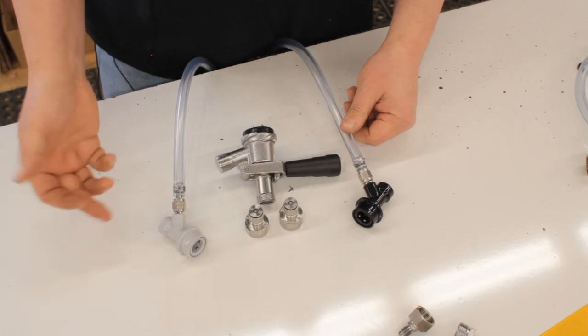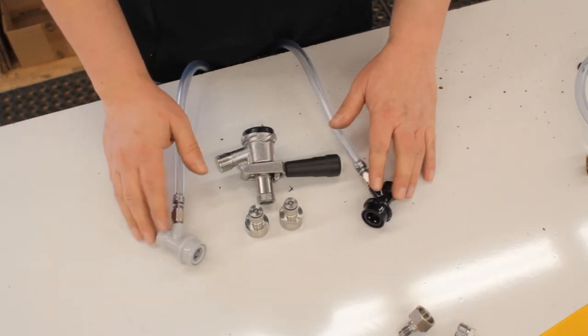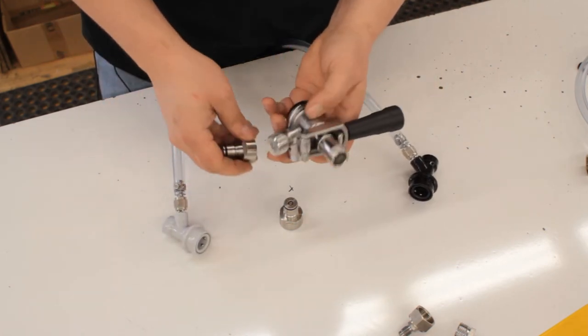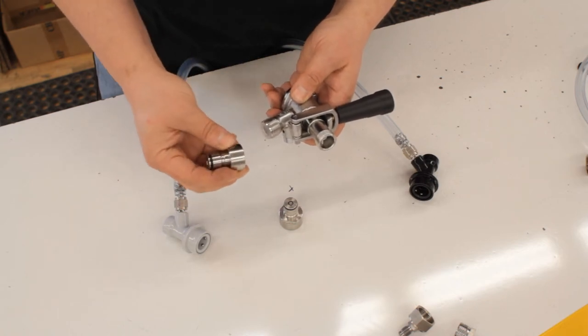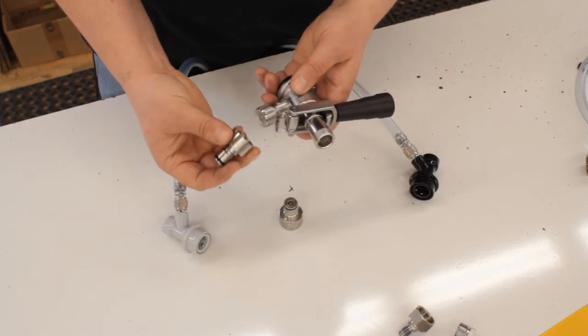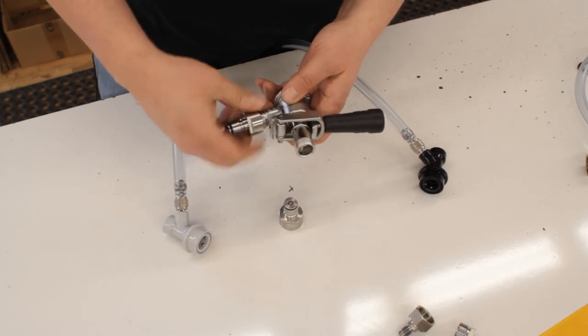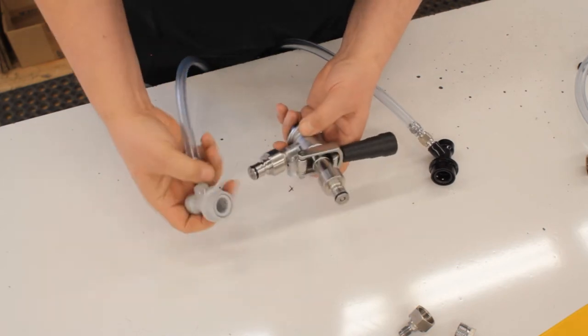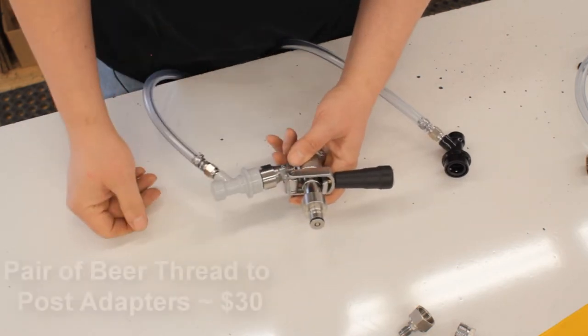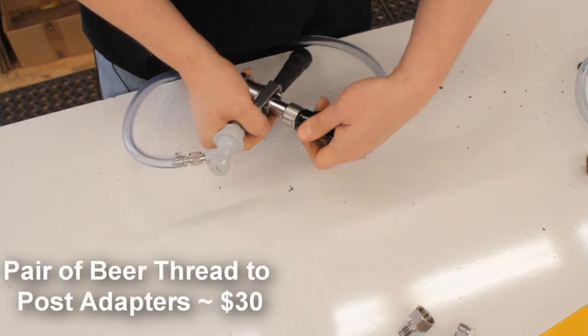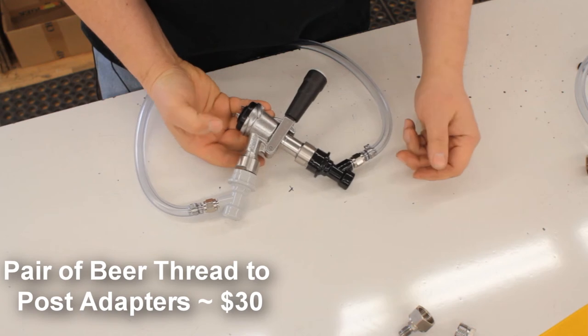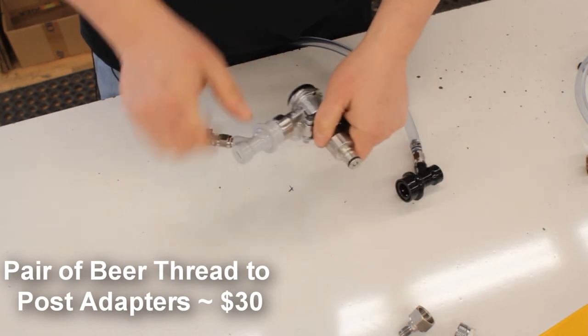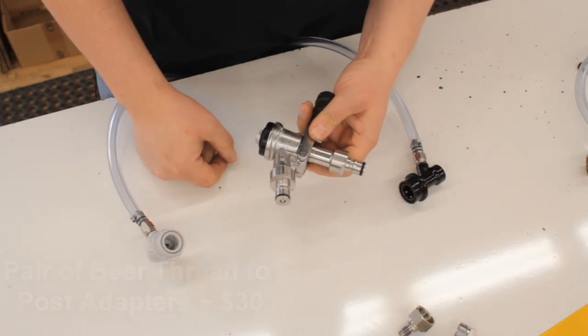Now if you want to get a little bit more fancy and spend a little bit more money, you can leave your ball lock quick disconnects on your hoses just like when they're used for homebrew and equip your commercial coupler with these beer thread to ball lock post adapters. So this just simply threads onto the gas in and the beverage out, and now you just simply snap these on as if the coupler was a ball lock homebrew keg, and you're dispensing commercial beer through the same lines. This setup is a little bit more expensive at about $30 for the pair of adapters.